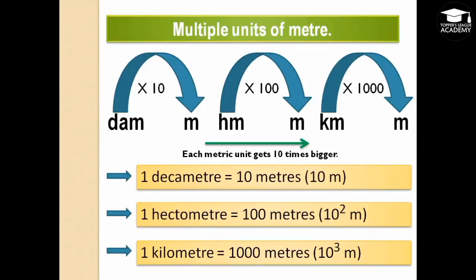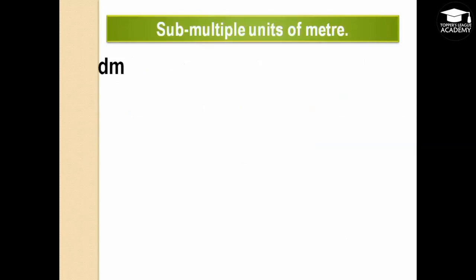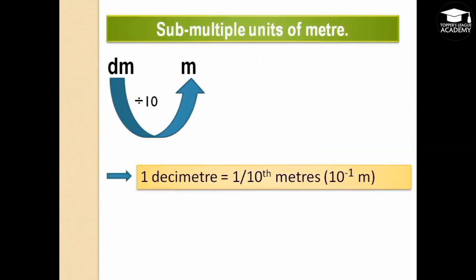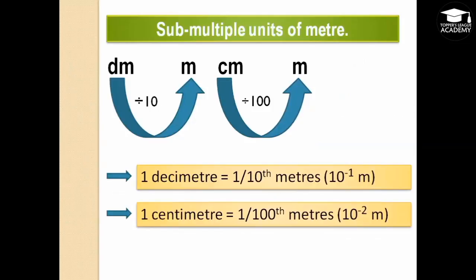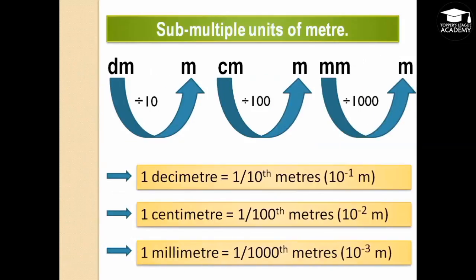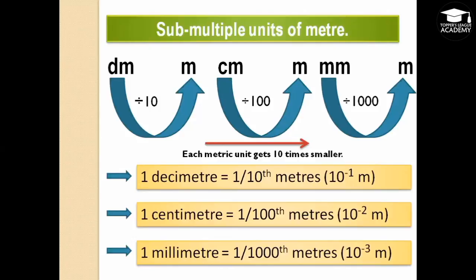Submultiple units of meter are used for small measures, decreasing by multiples of 10. One decimeter equals one-tenth of a meter, one centimeter equals one-hundredth of a meter, and one millimeter equals one-thousandth of a meter. Moving from left to right, we are decreasing by the multiple of 10.